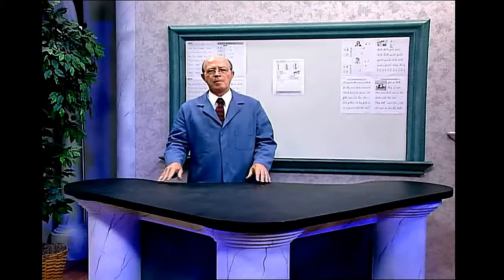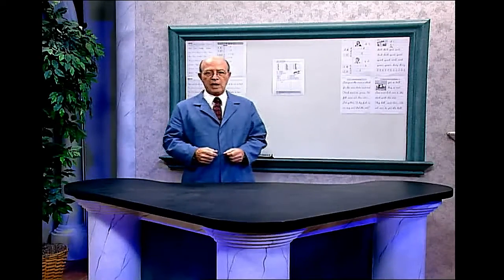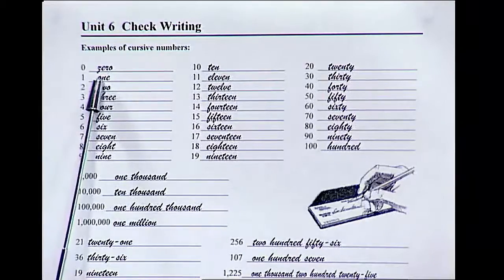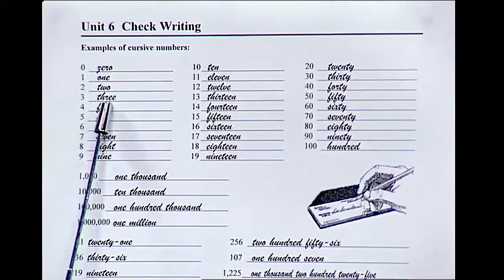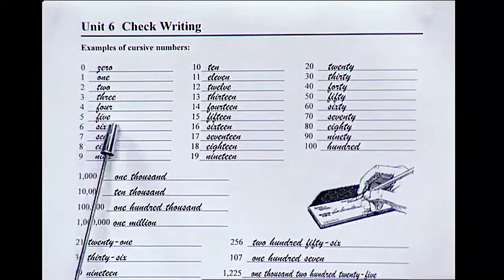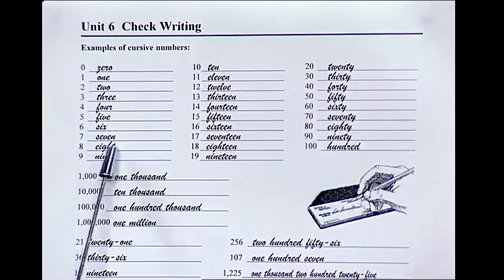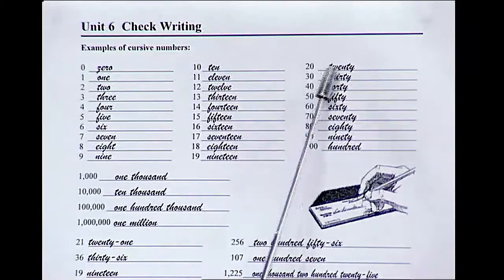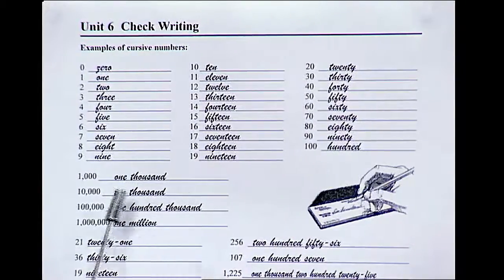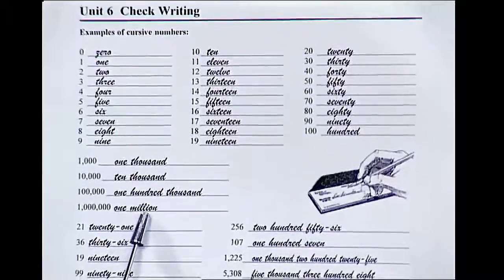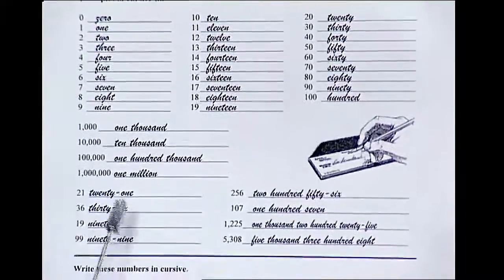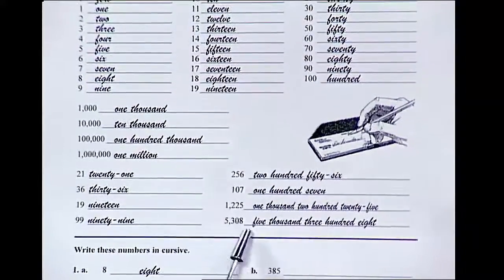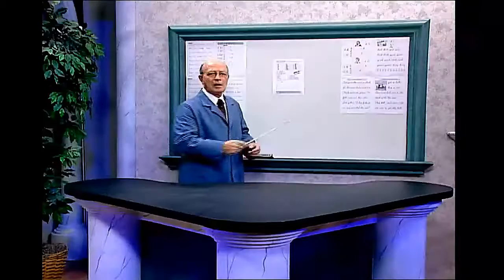Check writing. In the book we have some examples of cursive numbers: 0, 1, 2, 3, 4, 5, 6, 7, 8, 9, 10, 19, 20, 100, over here 1,000, 1 million, 21, 99, 256, 5,308.